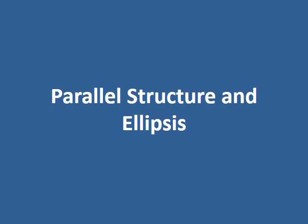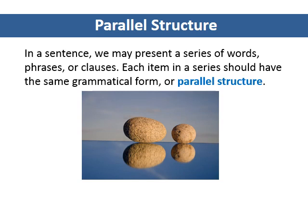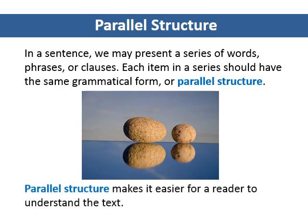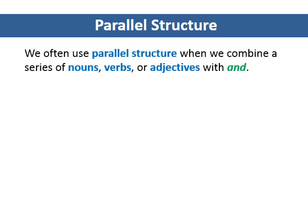Parallel Structure and Ellipsis. In a sentence, we may present a series of words, phrases, or clauses. Each item in a series should have the same grammatical form, or parallel structure. Parallel structure makes it easier for a reader to understand the text. We often use parallel structure when we combine a series of nouns, verbs, or adjectives with the conjunction and.